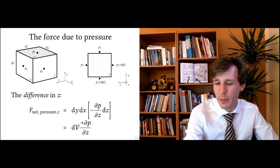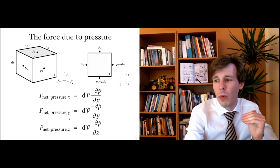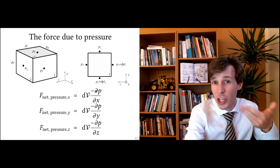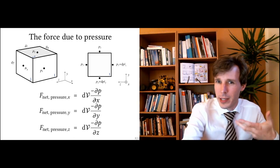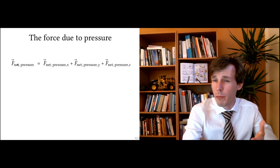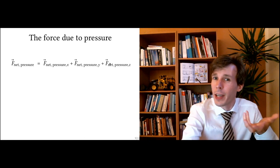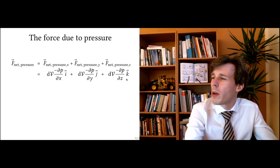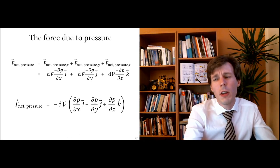We do the same thing for the x and y directions. Each time we get the volume of the cube multiplied by the change of pressure with respect to that direction. Summing these up, the net force due to pressure on the cube has three components — in x, y, and z — each written as a function of the pressure gradient in the local direction. This gives a somewhat cumbersome equation.